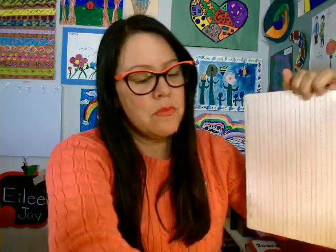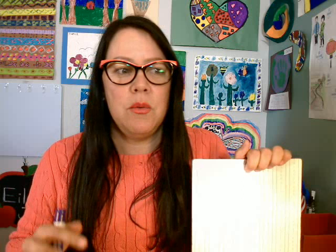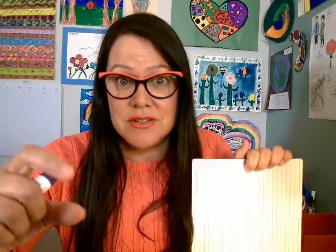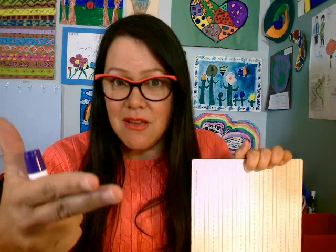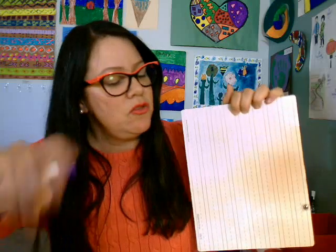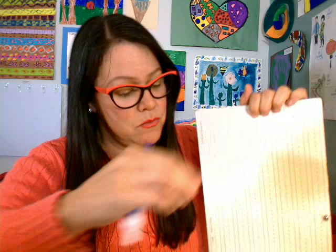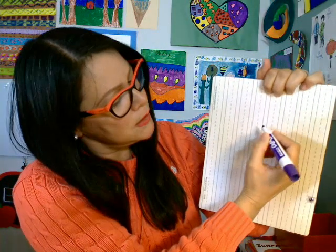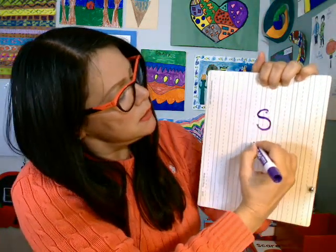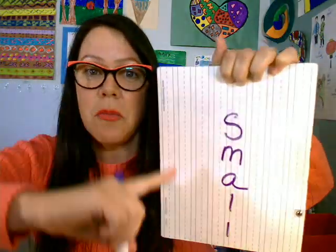Different classroom. We were working on S-blends. We were dealing with pictures of a snake, smoke, a snail, and small — S-blends. So I started with the first word going down. Small.